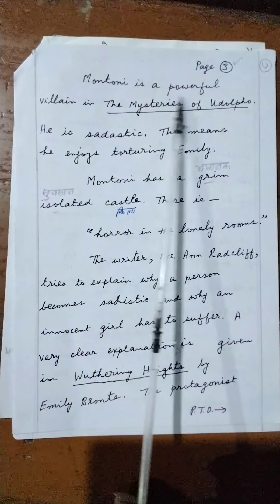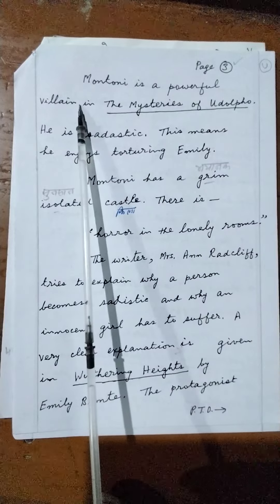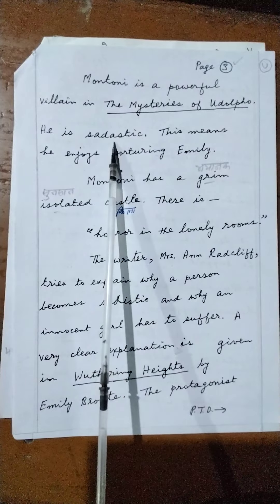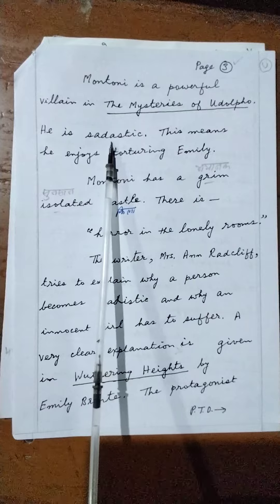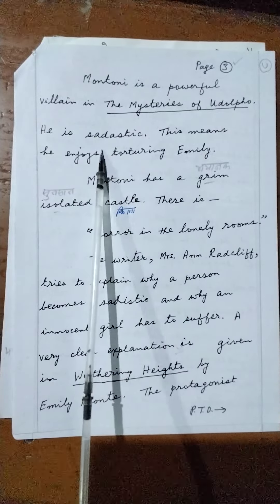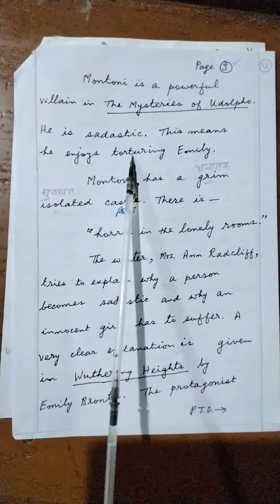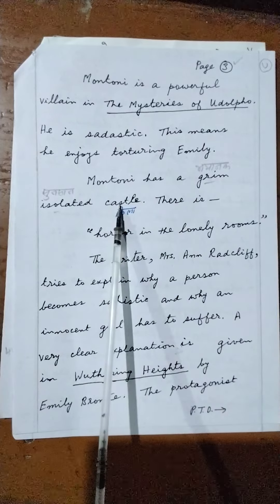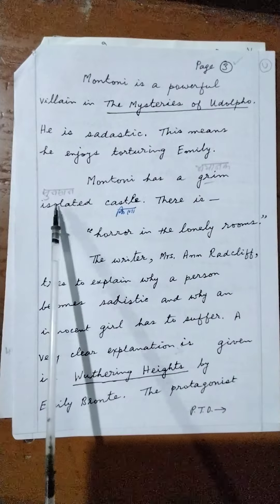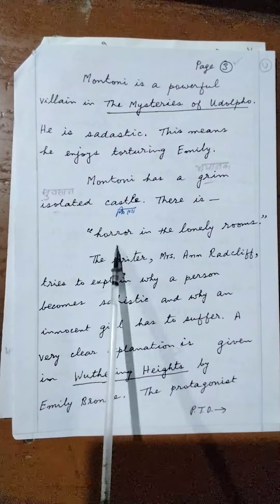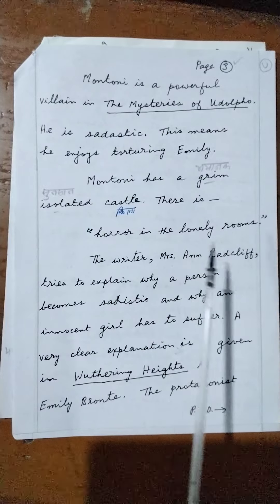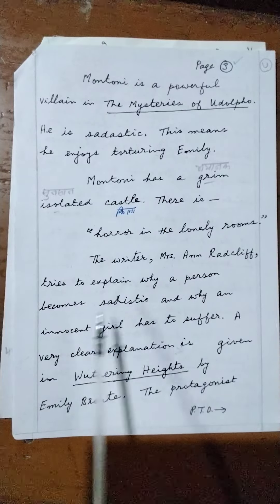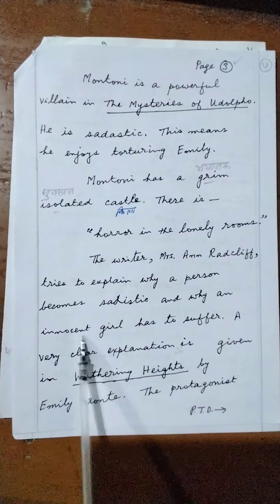Montoni is a powerful villain in The Mysteries of Udolpho. He is sadistic — meaning he enjoys torturing Emily. Emily faces a grim, isolated castle with horror in the lonely rooms. The novel tries to explain why a person becomes sadistic and why an innocent girl has to suffer.